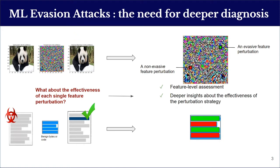Therefore, a feature-level perturbation assessment is required to obtain deeper insights about the effectiveness of the perturbation strategy. Such diagnosis can also lead to deeper understanding of adversarial input perturbation attacks, which could enable future efforts towards robustness. In other words, the main motivation is to separate single feature perturbations linked to effective evasion from those that do not play a role in the evasion goal. For this purpose, we employ machine learning explanation methods.